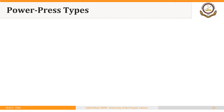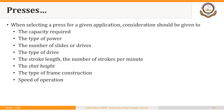When selecting a press for a given application, consideration should be given to the capacity required. Capacity here means the force that can be applied by the press — generally expressed in tons, called tonnage, or in units of newtons. We can calculate how much force will be required for a certain operation and then select or purchase the required press.